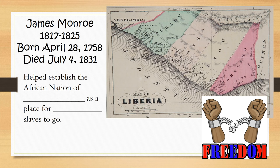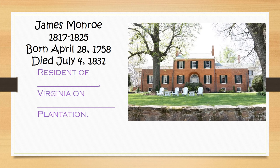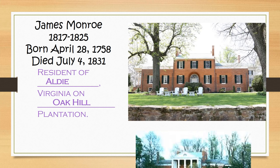James Monroe, as president, also helped establish the African nation of Liberia as a place for freed slaves to go — something he was really advocating for. Something special and unique about President James Monroe is that he was a local resident of Aldie, Virginia, and you can visit his plantation called Oak Hill, just minutes from our school.